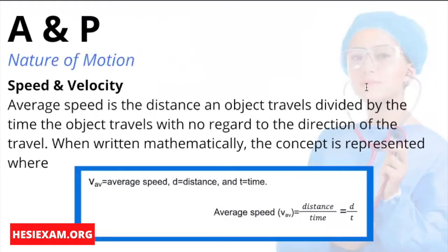Speed and velocity. To understand the behavior of matter, the nature of motion must be understood. Average speed is the distance an object travels divided by the time the object travels with no regard to the direction of the travel. When written mathematically, the concept is represented where VAV equals average speed, D equals distance, and T equals time.